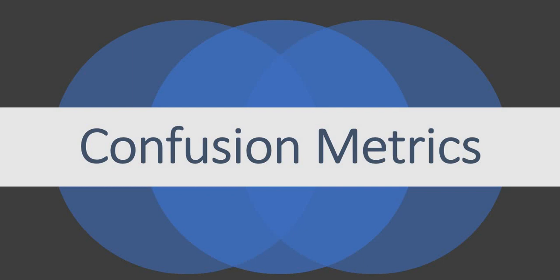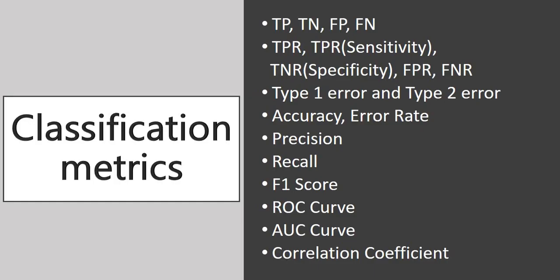It's a specific table layout that allows visualization of the performance of an algorithm, typically a supervised learning one. Each column of the matrix represents the instances in a predicted class while each row represents the instances in an actual class, or vice versa. The name stems from the fact that it makes it easy to see if the system is confusing two classes — that is, commonly mislabeling one as another.